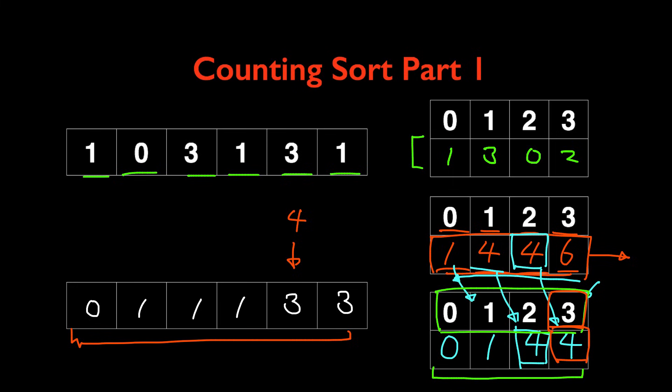Another way to think about it is that there are four items that should appear before the number 3 in the sorted array. That should be obvious if you just look at the first array that we constructed.